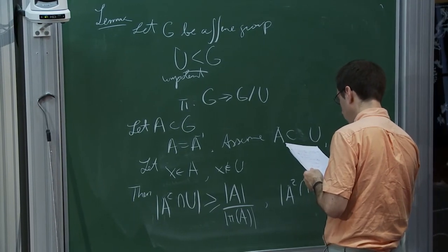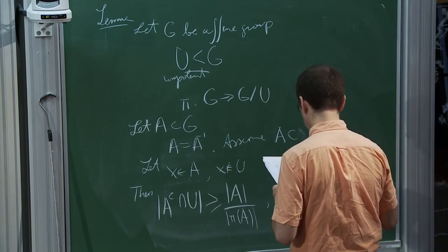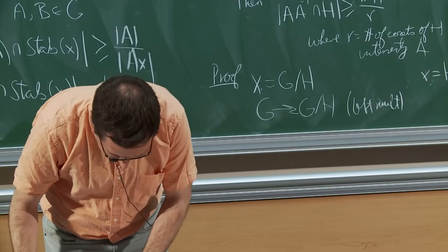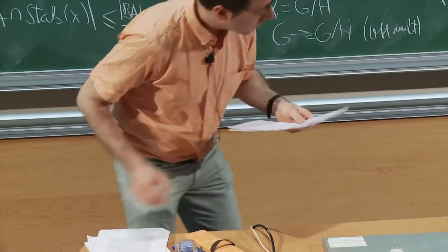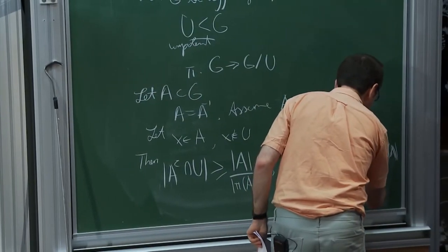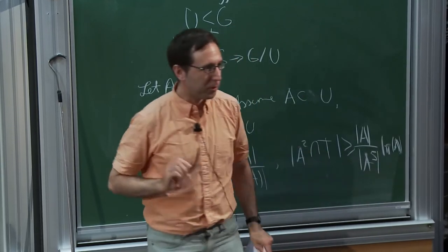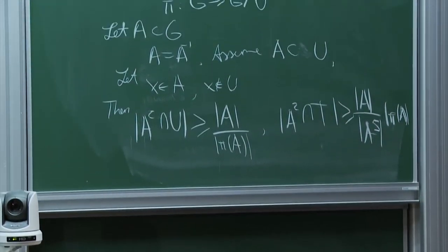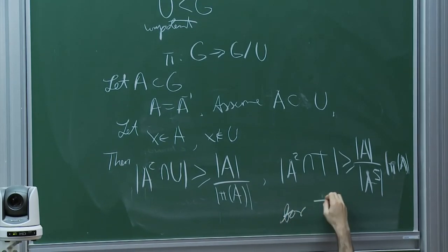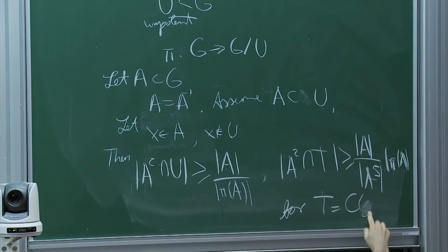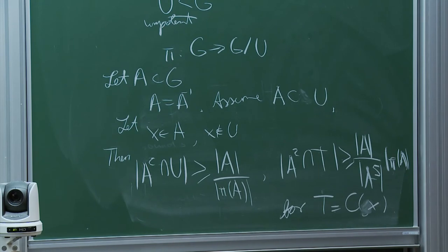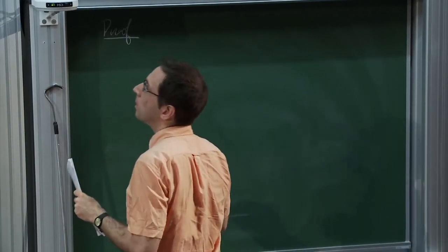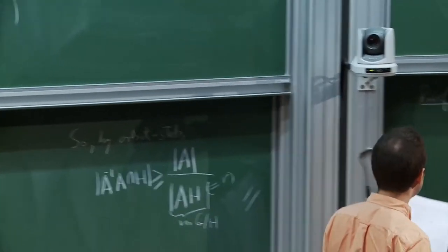A itself might have no unipotent elements and no elements in your favourite torus. However, A squared will have many unipotent elements, and perhaps even more surprisingly, it will also have many elements in your favourite torus — for any x in A which is not in U.